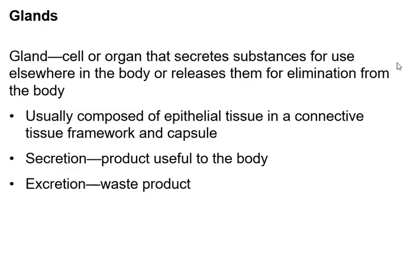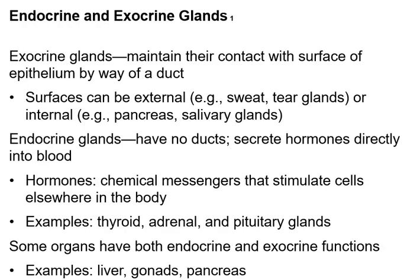Now we move on to glands — areas where you squirt stuff out. If you're squirting out something the body needs, we call it secretion. If you're squirting out stuff the body wants to get rid of, we call it excretion. We further categorize glands by whether they secrete through a duct — like your sweat glands, tear glands, and salivary glands, called exocrine glands — or whether they just secrete directly from the cell, called endocrine glands.